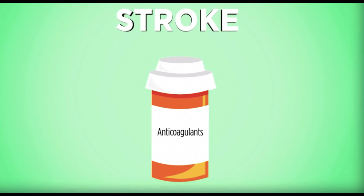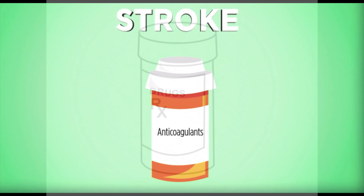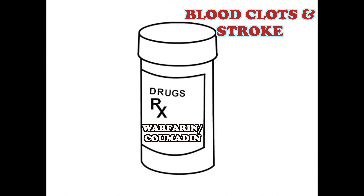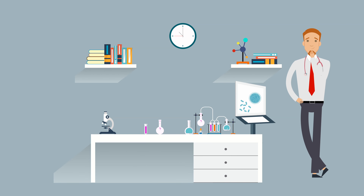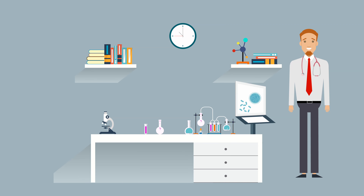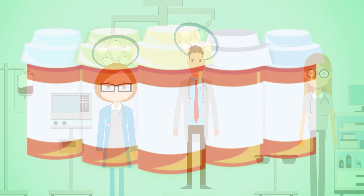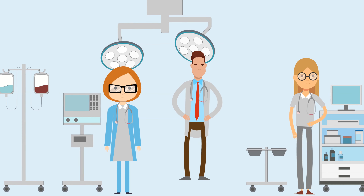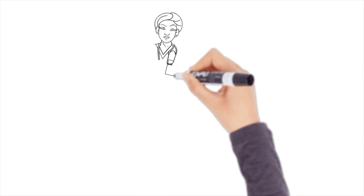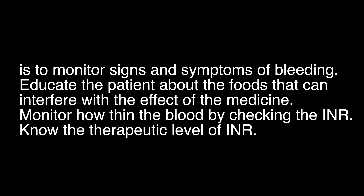Another important medication used for AFib is anticoagulant medications. Anticoagulant or antiplatelet therapy medications such as warfarin or Coumadin reduce the risk of blood clots and stroke, but they do not eliminate the risk. Regular blood tests are required when taking Coumadin to evaluate its effectiveness. If you are taking warfarin alternatives, regular blood tests are not required. The nursing responsibility is to monitor signs and symptoms of bleeding, educate the patient about foods that can interfere with the medication, monitor how thin the blood is by checking the INR, and know the therapeutic level of INR.